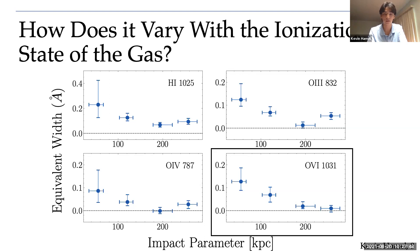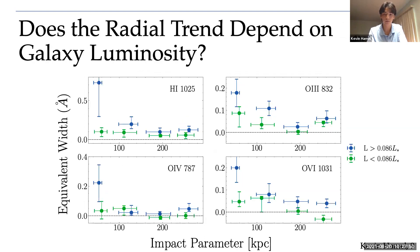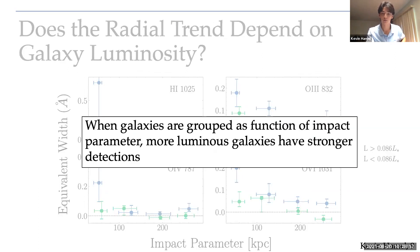We're also interested in seeing if gas of different ionization states respond differently to galaxy parameters. We first thought of experimenting with the galaxy luminosities. In our sample, we calculated the median luminosity and separated the higher luminosity galaxies in blue and the lower ones in green. We find that throughout our detected species, more luminous galaxies have stronger equivalent widths and, therefore, more gas. This is sort of what we expected since more luminous galaxies are generally more massive. The main takeaway here is that when galaxies are grouped as a function of impact parameter, more luminous galaxies have stronger detections.